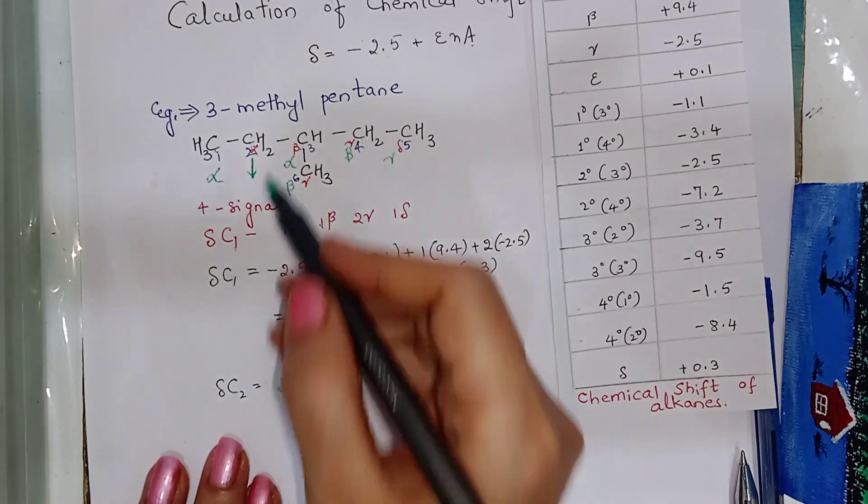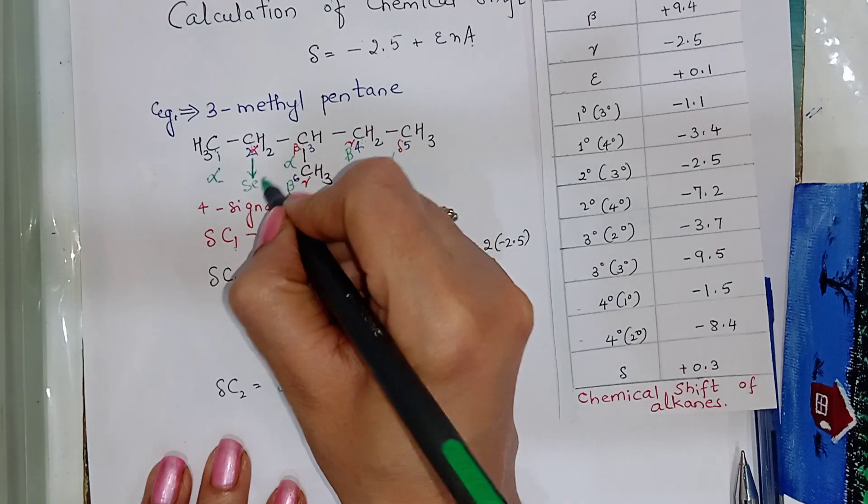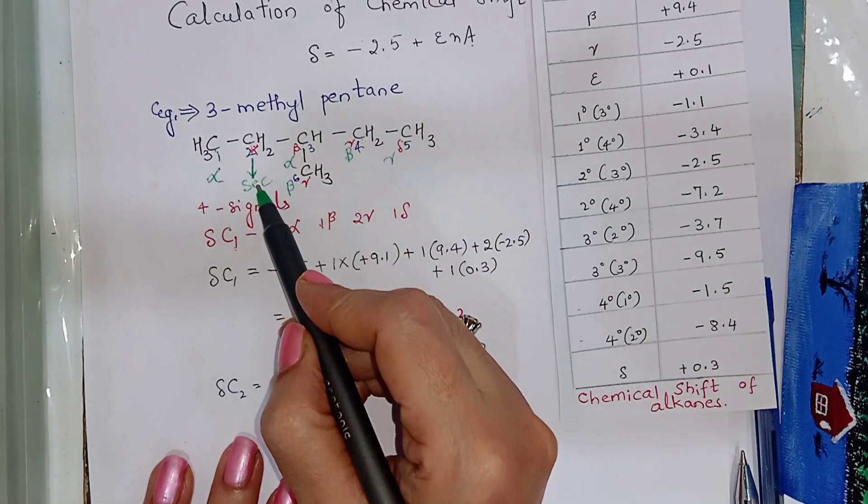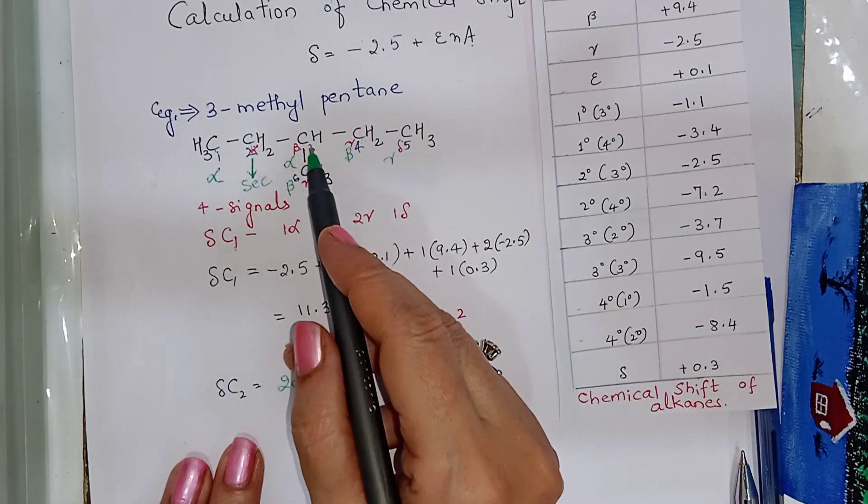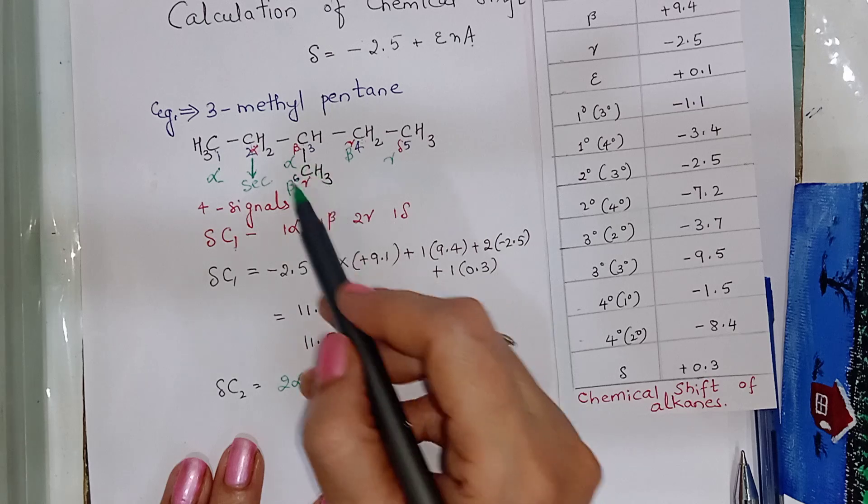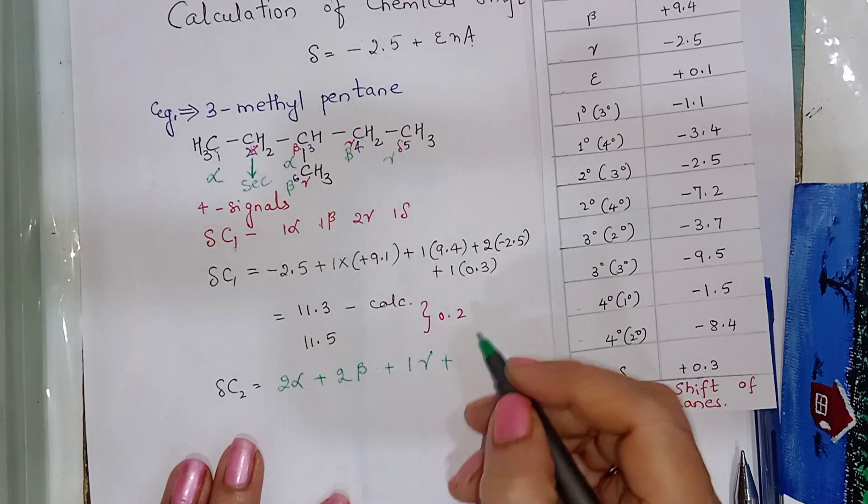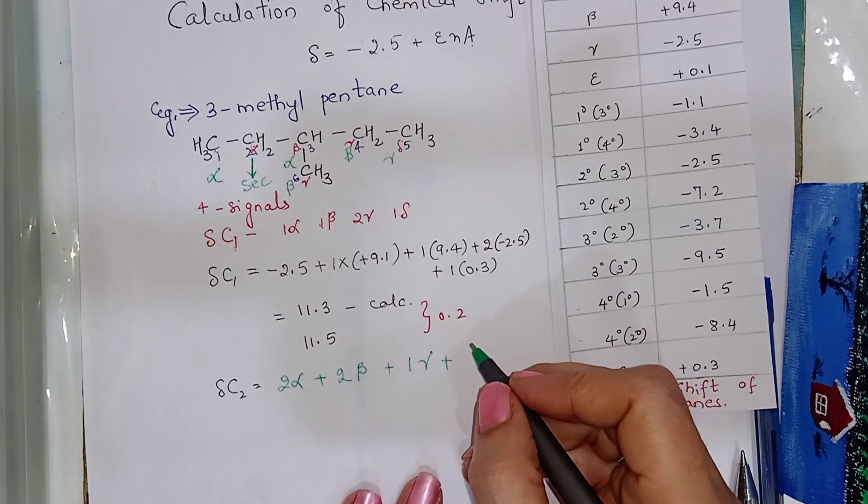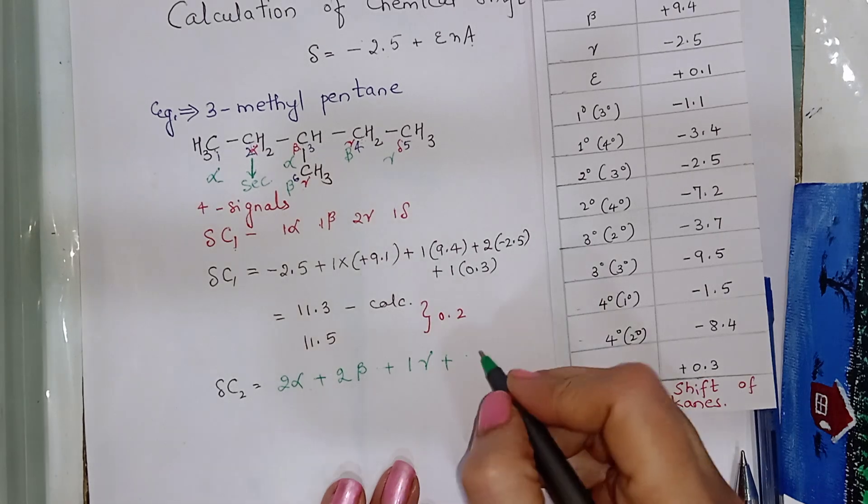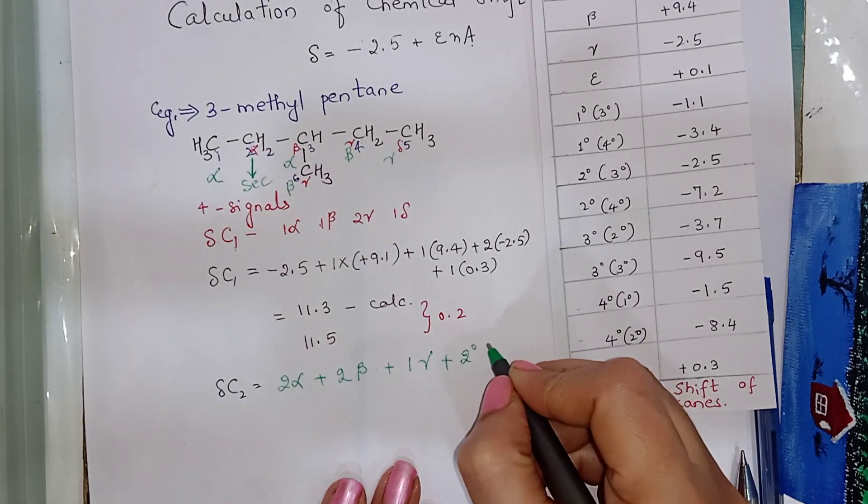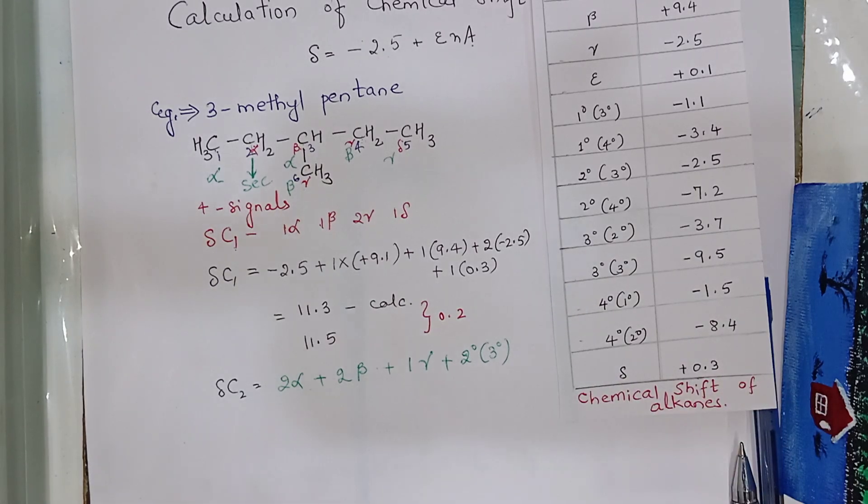So, C2 carbon is 1, as well as 1.1. And C2 is the secondary carbon, which is attached, that is 2 degree carbon, which is attached to 1 tertiary carbon. So, plus it will be secondary carbon attached to tertiary carbon.